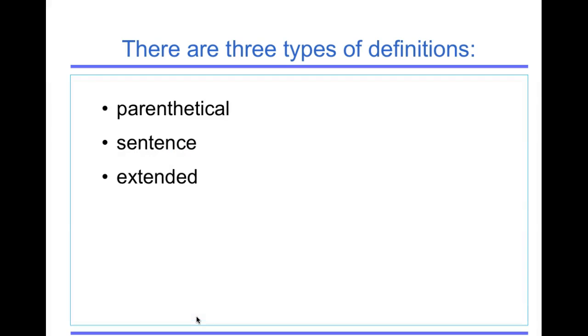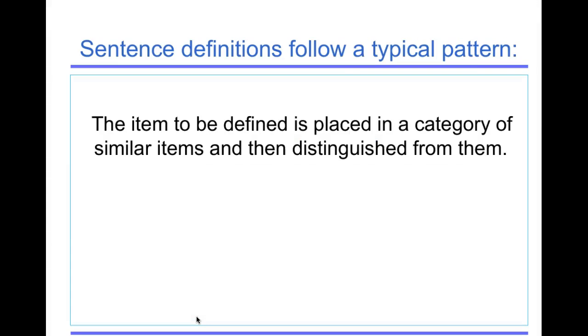There are three different types of definitions: parenthetical, sentence, and extended. Sentence definitions follow a typical pattern. The item to be defined is placed in a category of similar items, then distinguished from them.